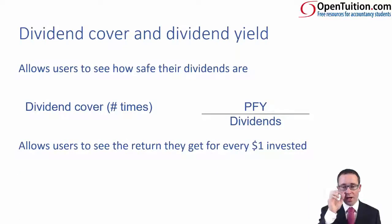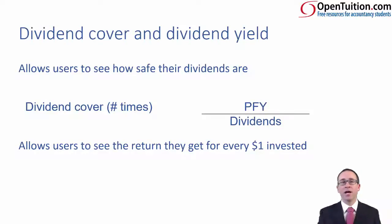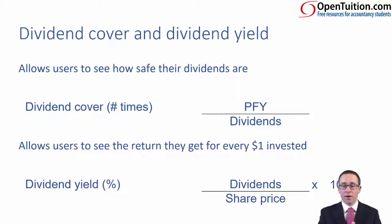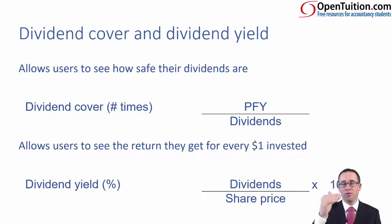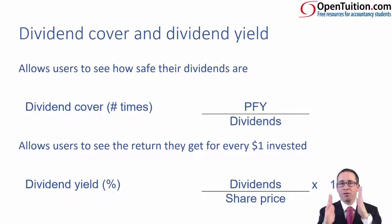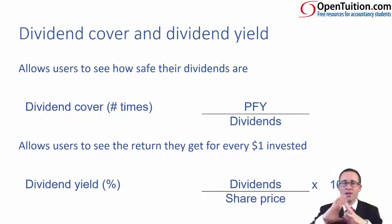If you're looking at dividend yield, that looks at the return you get for every one dollar invested, so you can see how well one share has performed against another share in your investments — a relative return on the amount that you've invested. It's a percentage because it is relative. You take your dividends and divide by your share price — specifically dividend per share divided by price per share. It's not really useful for a year-on-year comparison for your company. Why? Because everything else gives us comparability year on year — why not dividend yield?